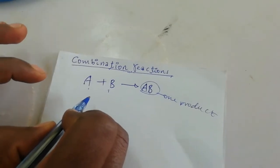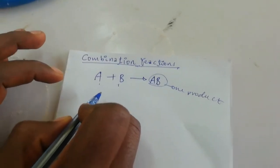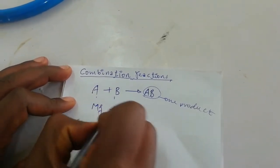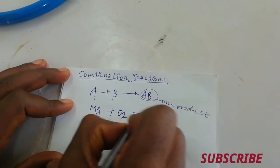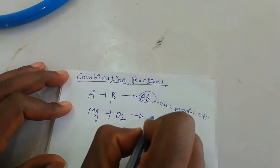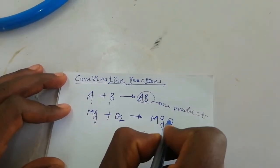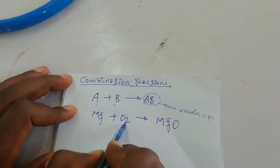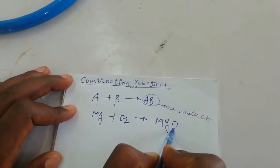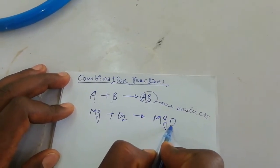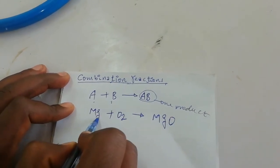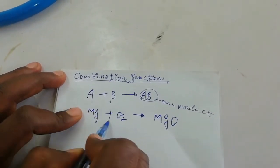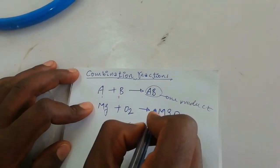For this video, we are going to produce magnesium oxide from magnesium metal plus oxygen, which produces magnesium oxide. To balance this chemical reaction, we have two oxygen here — one oxygen from the product side and one magnesium from the reactant side.